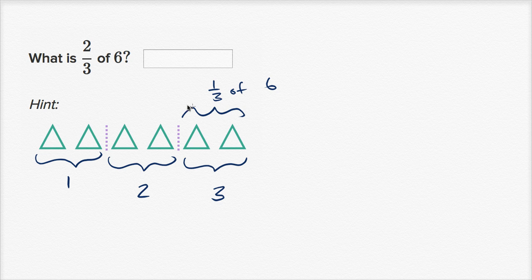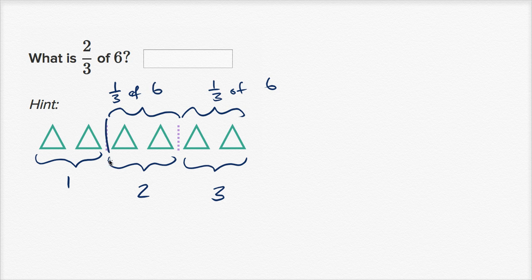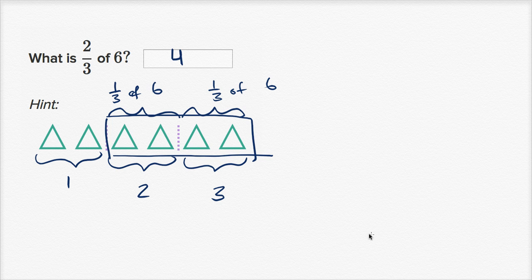We see that one-third of six is two, but we want two-thirds of six. So that's going to be two of these groups of one-third. That's one group of one-third of six, and that's another third of six. So if you took both of these together, you have two-thirds of six, and we see that that is one, two, three, four triangles — so that is four triangles.